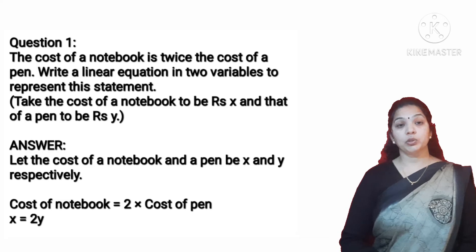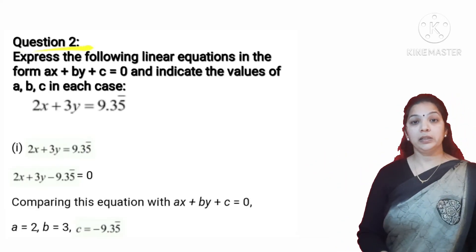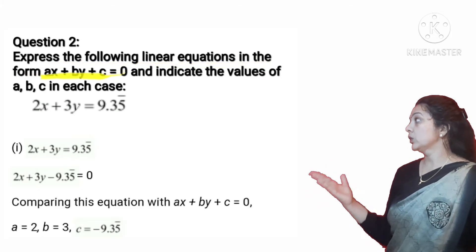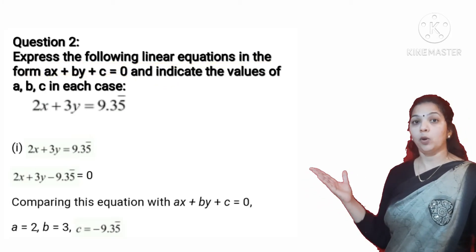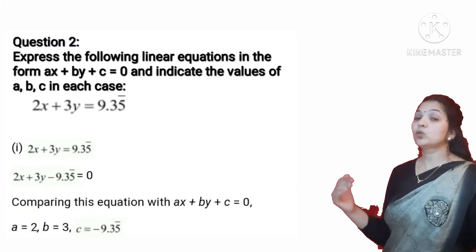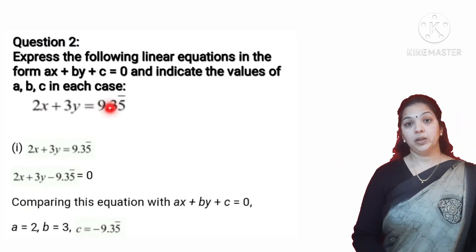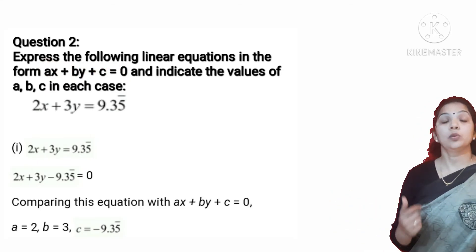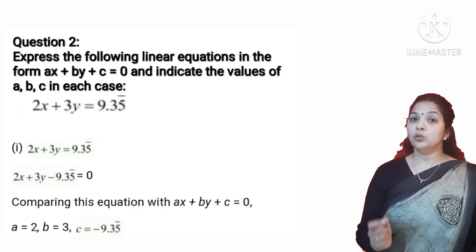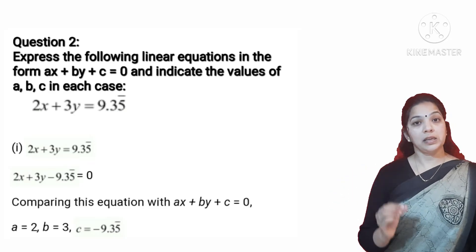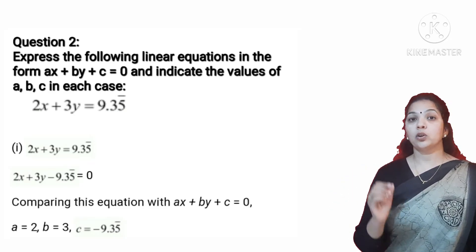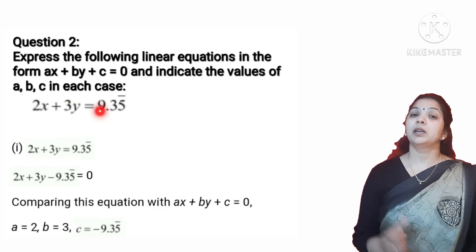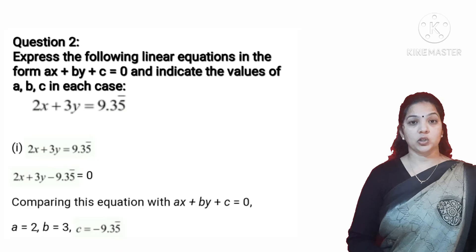The next question asks us to express the following linear equations in the form AX + BY + C = 0, which is the general form of a linear equation, and indicate the values of A, B, and C in each case. A is the coefficient of X, B is the coefficient of Y, and C is the constant term.